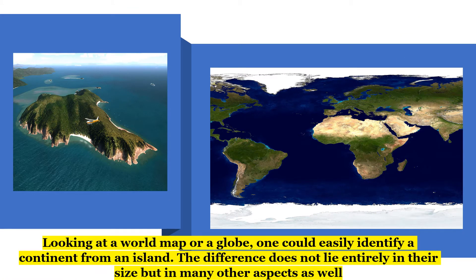Looking at a world map or a globe, one could easily identify a continent from an island. The difference does not lie entirely in their size, but in many other aspects as well.